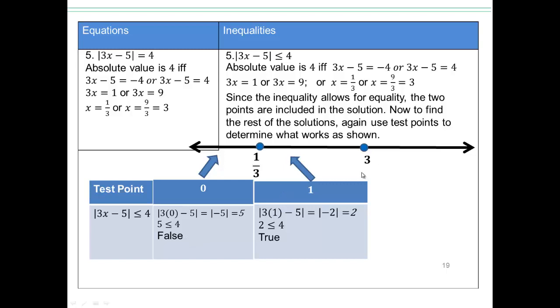All right. Pick a number between 1 third and 3, say 1. 3 times 1 is 3, 3 minus 5 is negative 2, absolute value of negative 2 is 2, which is less than or equal to 4. It's a true statement, so all of these are going to be your solutions.